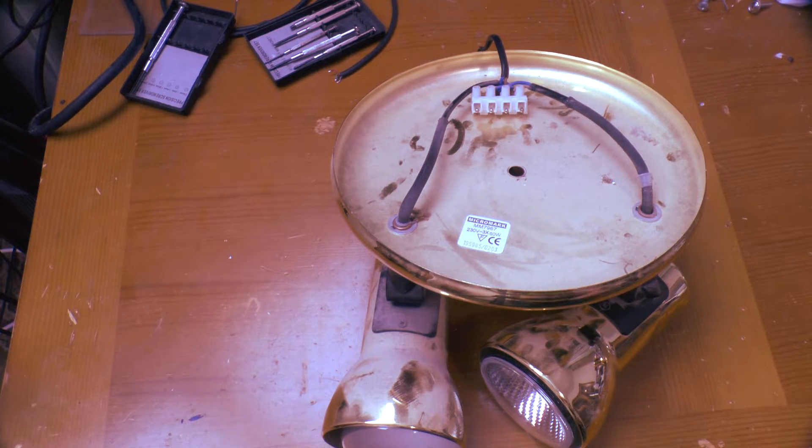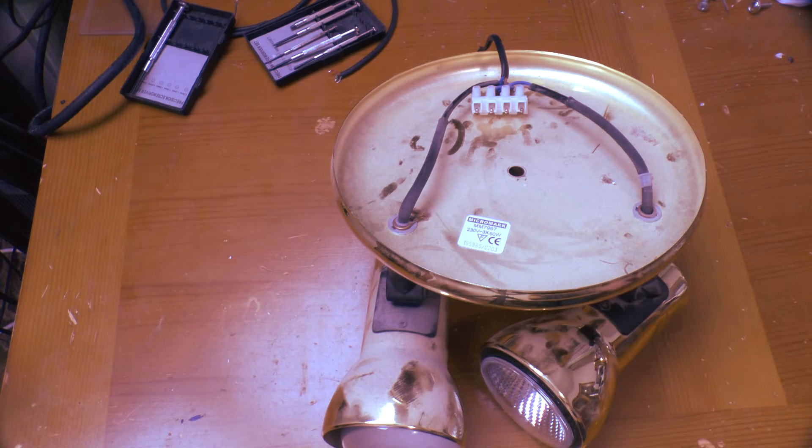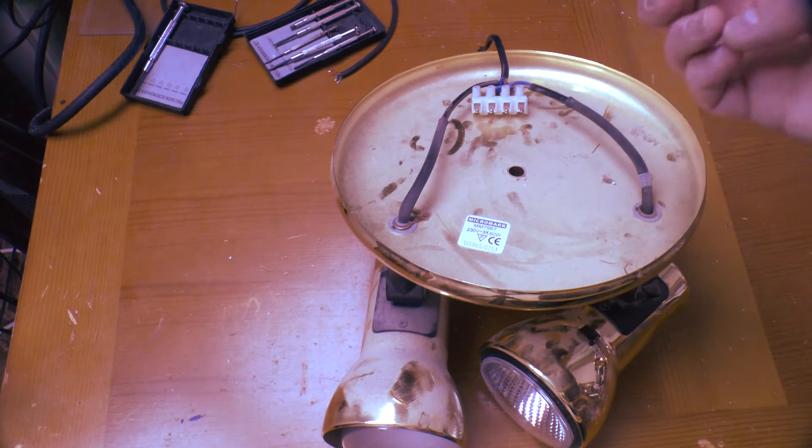Greetings. This is a Micromark MM7967 triple spotlight. As you can see it's a brass one, and it's quite dusty because it's quite old.